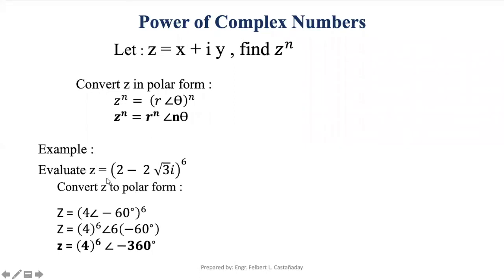For example, evaluate z equals the quantity (2 minus 2√3·i) raised to a power of 6. First, we convert this rectangular form to polar form, giving us 4 at argument negative 60 degrees, raised to 6. The result is the modulus 4 raised to 6, and the argument negative 60 degrees multiplied by 6, giving argument negative 360 degrees.